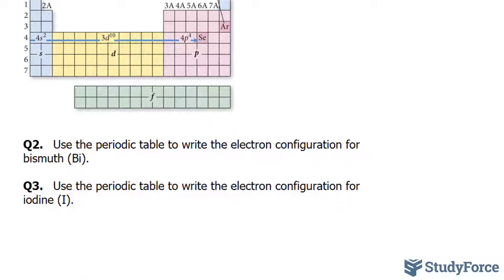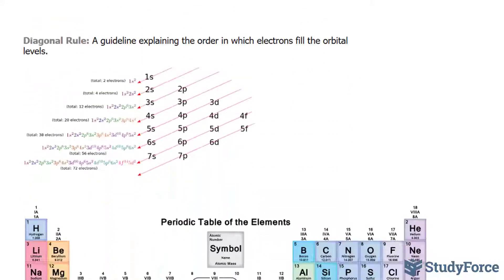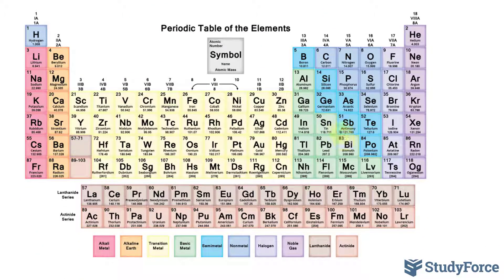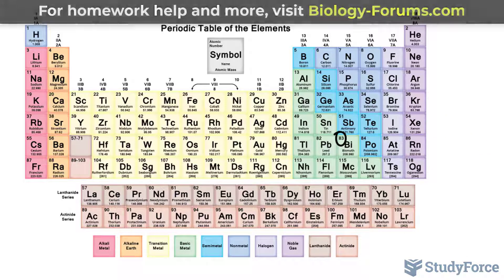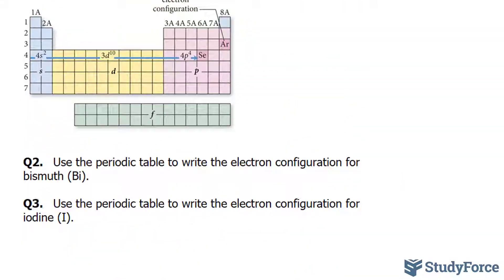This time they want us to do the same thing but for bismuth. Let's find out where bismuth is on the periodic table. Bismuth is found right here. It has an atomic number of 83, so there are 83 electrons. To do this quickly, we'll use the preceding noble gas, which in our case is xenon, and it has 54 electrons. Let's go ahead and write it out.